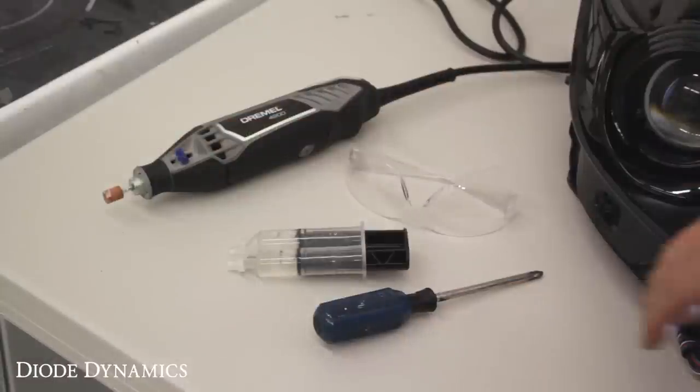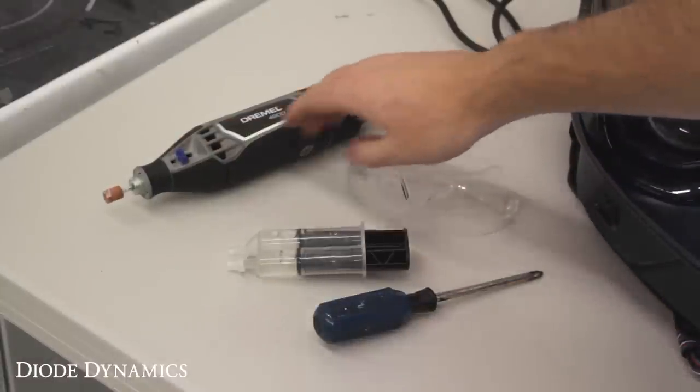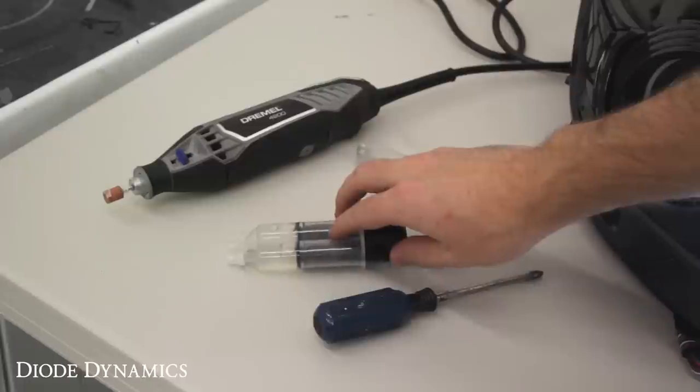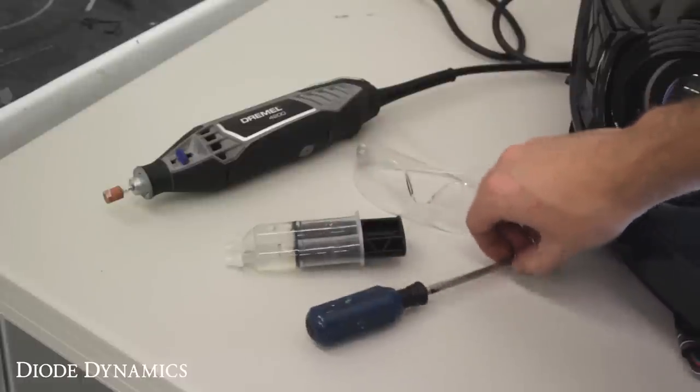The tools you'll need to install the boards include a rotary tool with grinding or sanding attachment, and of course safety glasses, as well as a 5-minute epoxy, and then a Phillips head screwdriver.